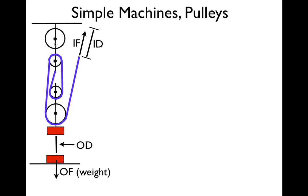Here's our simple pulley. We're going to use this as our machine. We have the upper pulley, we have the lower pulley, and we have the object that we're going to raise. The weight of the object we call the output force. The distance we raise it is the output distance. The distance we have to put into the machine to raise it is called the input distance, and the force we put in is the input force.